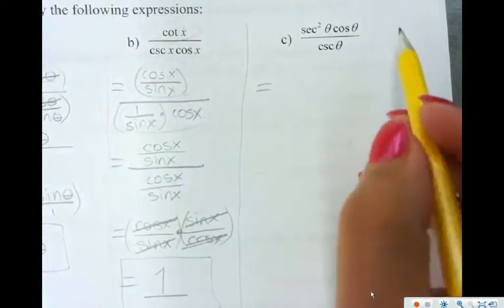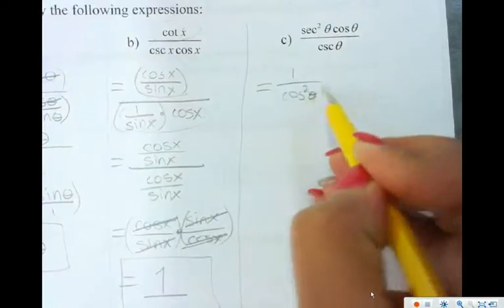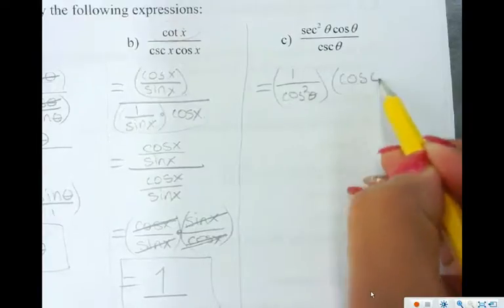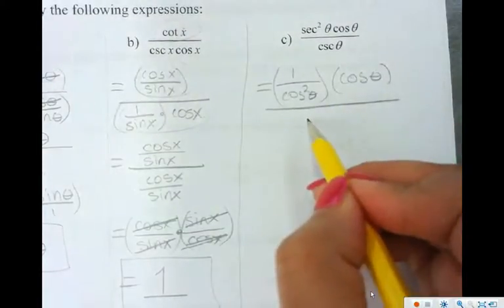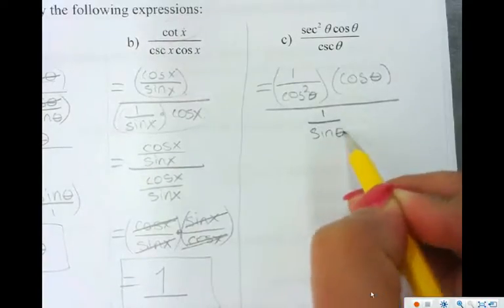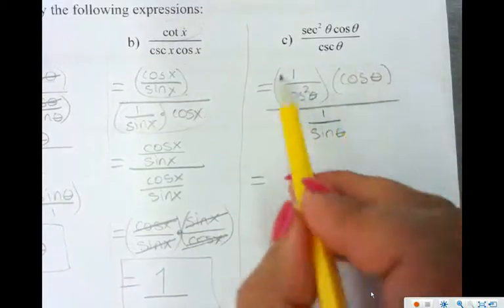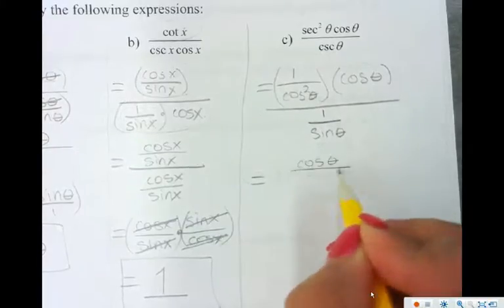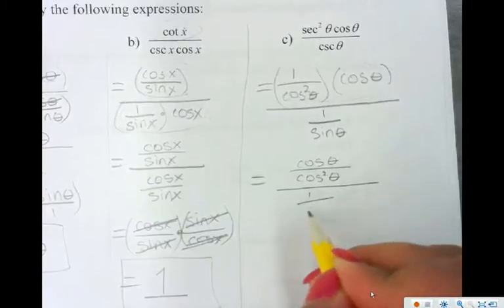All right, so how can I write secant squared? 1 over cos squared θ. And then just write cos θ here over cosecant, which is 1 over sin θ. Now let's clean this up here. This is going to be cos θ over cos squared θ over 1 over sin θ.